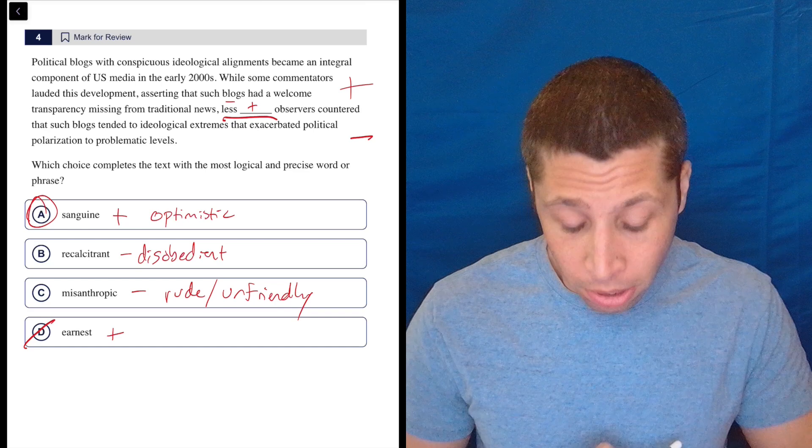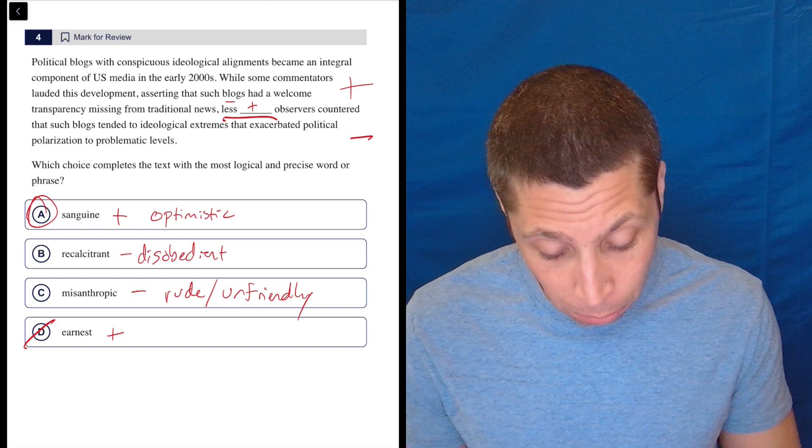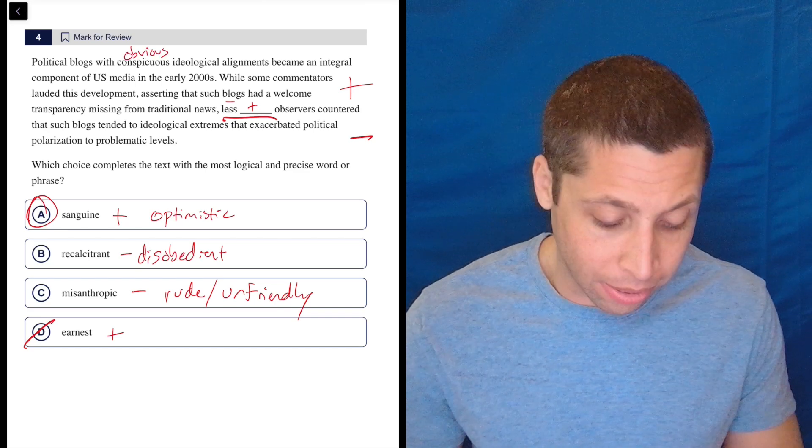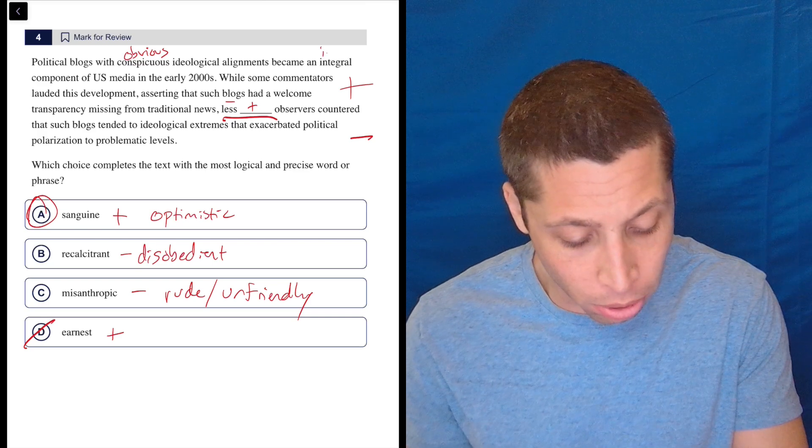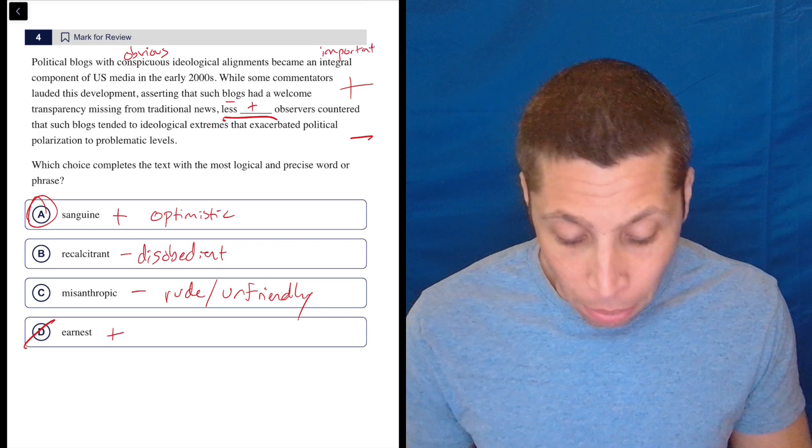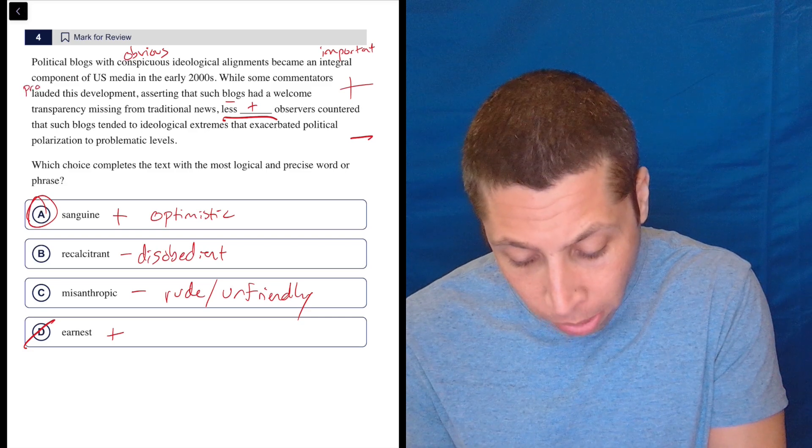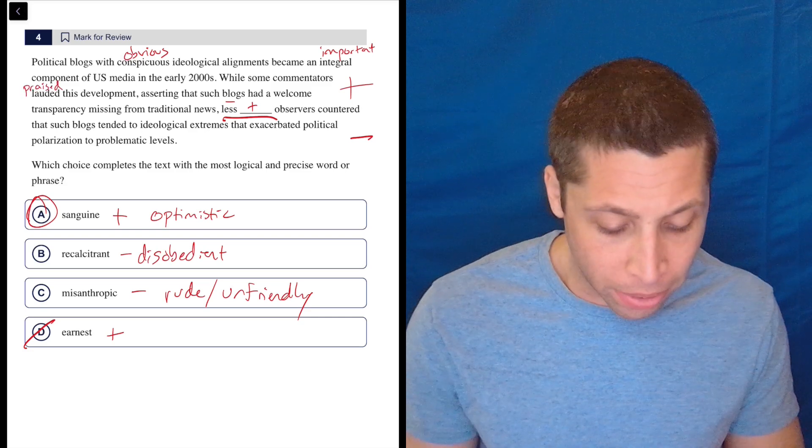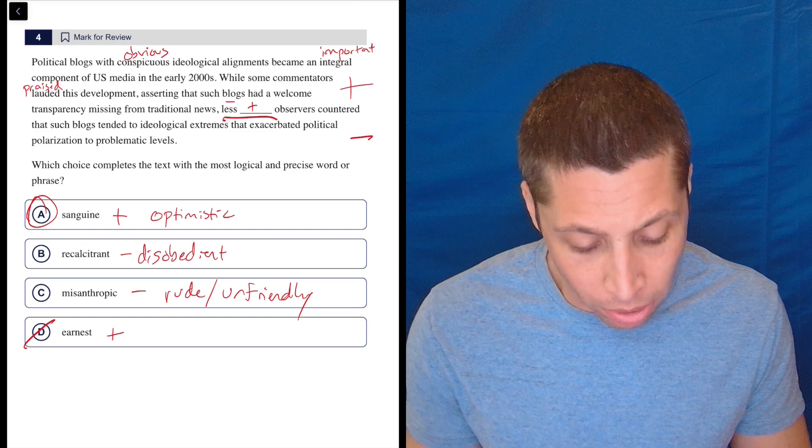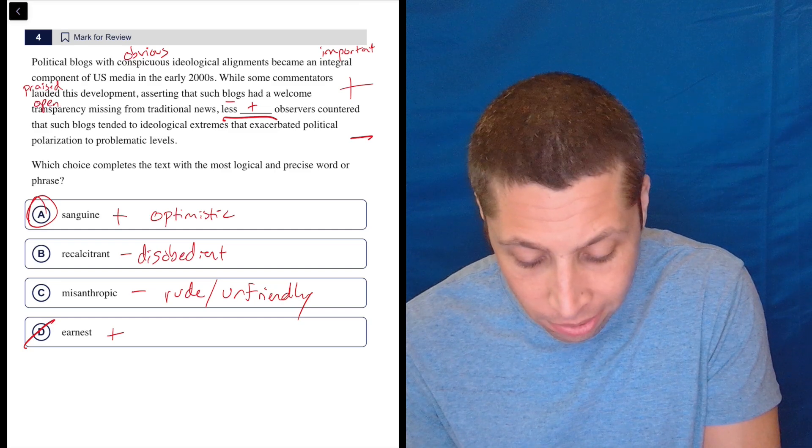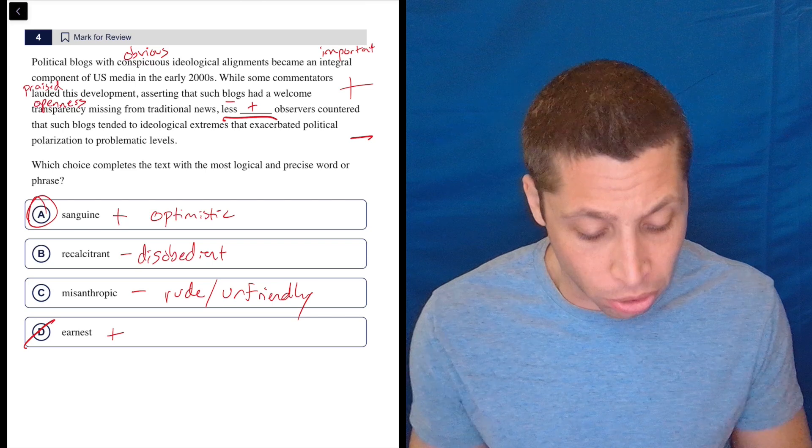Now there are a lot of other hard words in the passage itself, right? Political blogs with conspicuous, meaning obvious or noticeable ideological alignments became an integral or important component of U.S. media in the early 2000s. While some commentators lauded or praised this development, asserting that such blogs had a welcome transparency missing from traditional news, meaning openness missing from traditional news,